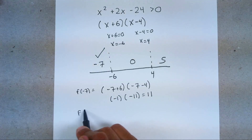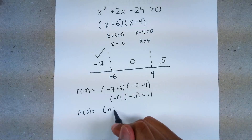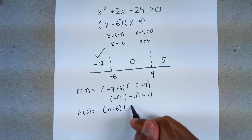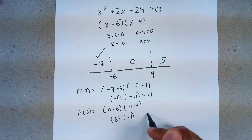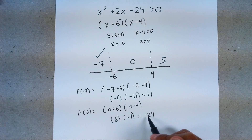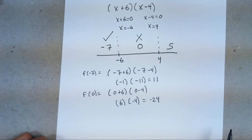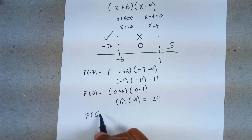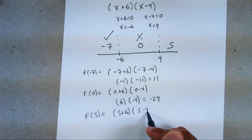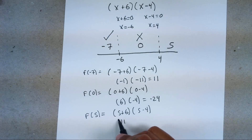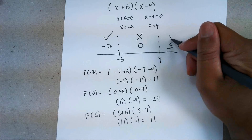Then we're going to plug in f(0), because we want to see if it gives us a value greater than zero. Plug it into the factored equation: (0 + 6)(0 − 4) = 6 × −4 = −24. That's negative, so because it's not greater than zero, this gets an x. Then the last one, plug in 5: (5 + 6)(5 − 4) = 11 × 1 = positive 11, which works out because that's greater than zero. So this gets a check mark.